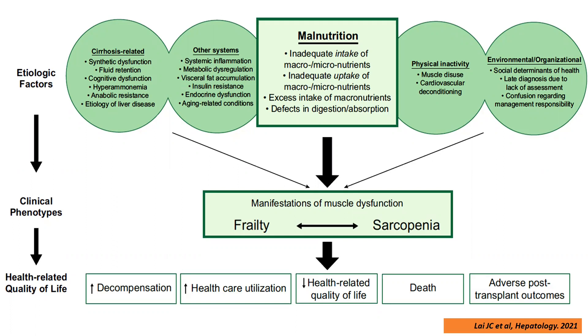Hence it becomes important that we identify frailty and sarcopenia in patients with cirrhosis and intervene early, so that we can halt the progression of sarcopenia and frailty and patient outcomes become better.